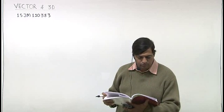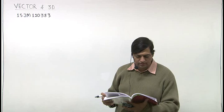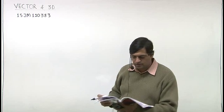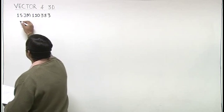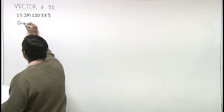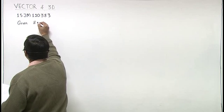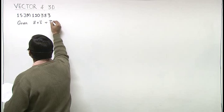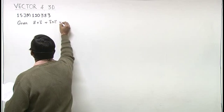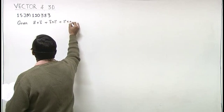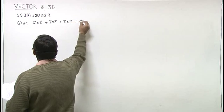In this question we are given that position vector of A, B, C are vector a, vector b, vector c and a cross b plus b cross c plus c cross a is equal to zero.